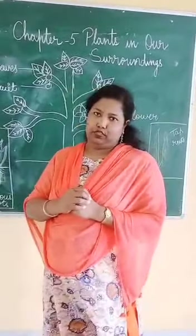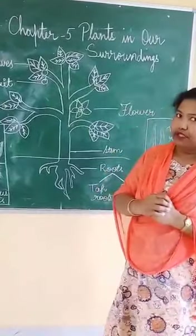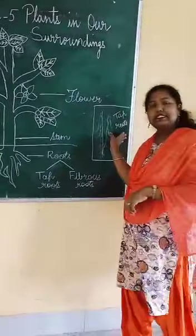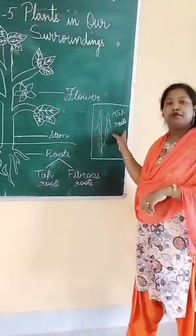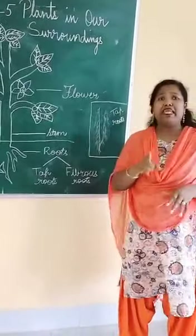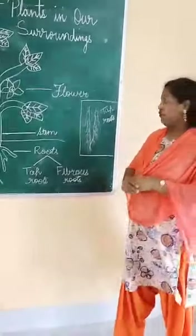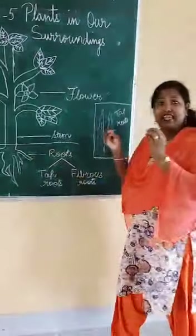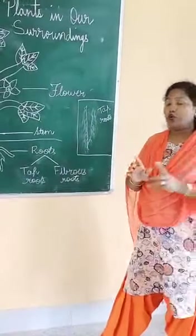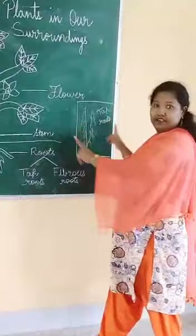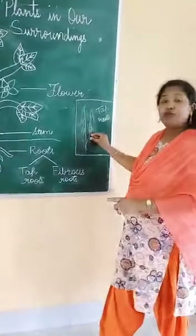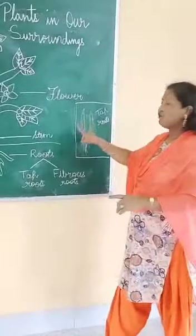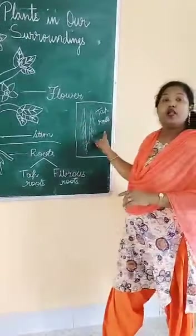There are two types of root. One is tap root and the second is fibrous root. Look at this — this is tap root. In tap root, you have one main thick root growing from here, and then a thin hairline grows from the side. This is called tap root.